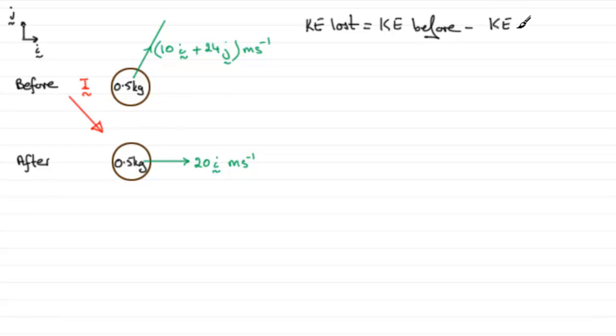Now we know that kinetic energy is equal to a half MV squared, and we need to get what the speed is in each of these cases. Now to get the speed here, all we need to do, let's call it v, apply Pythagoras theorem.